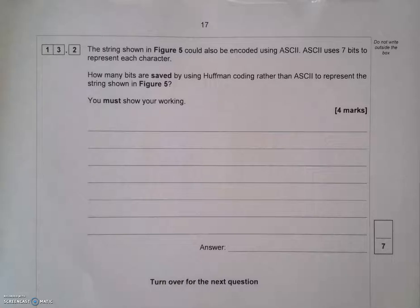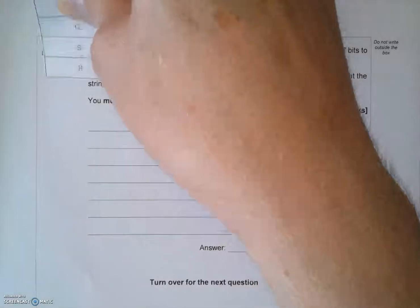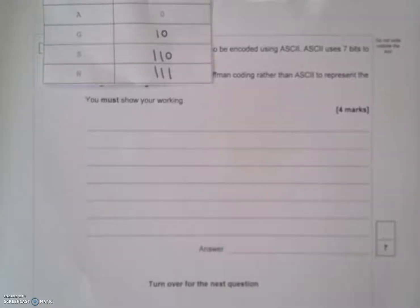Now, this is the second part of the question. This gains me another four marks to give me seven marks in total for this question. What I've got here is a question that says, the string shown in figure 5 could also be encoded using ASCII. ASCII uses seven bits to represent each character. How many bits are saved using Huffman rather than ASCII to represent the string? Must show you're working. So, what I've got to do here is show how I'm going to work this out. So, if you look back at this table from before there, if I just place that there, you can see the different characters that I've got there.